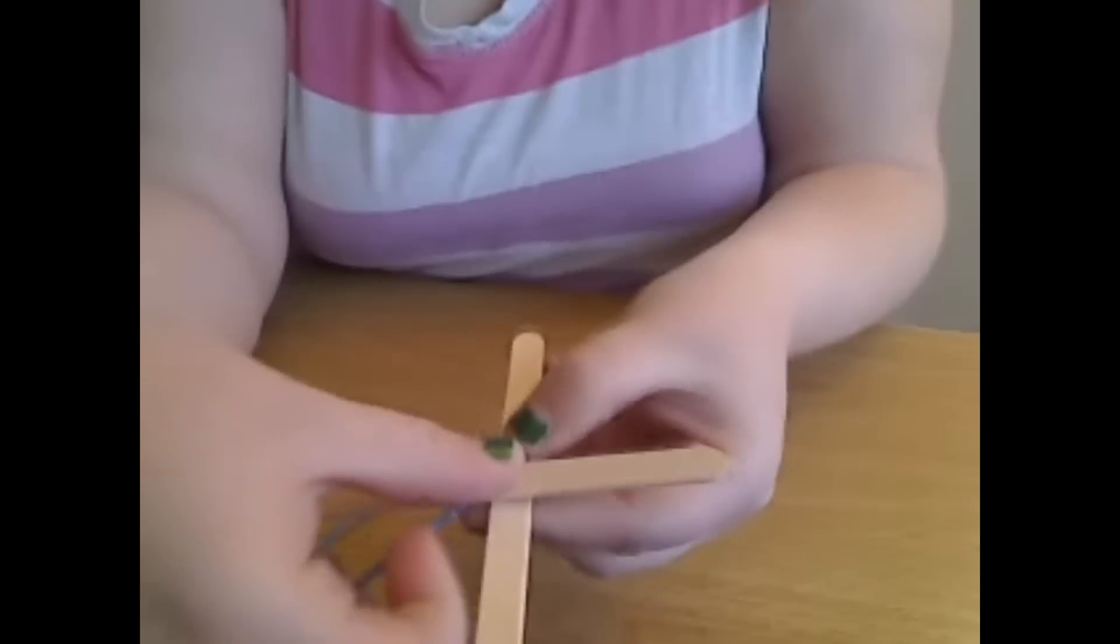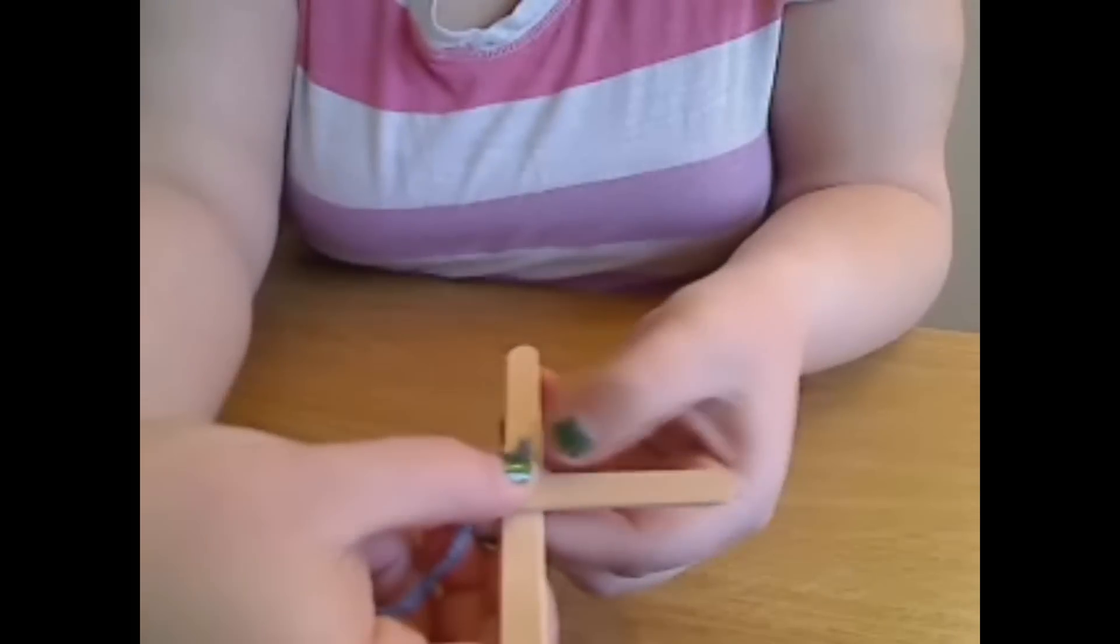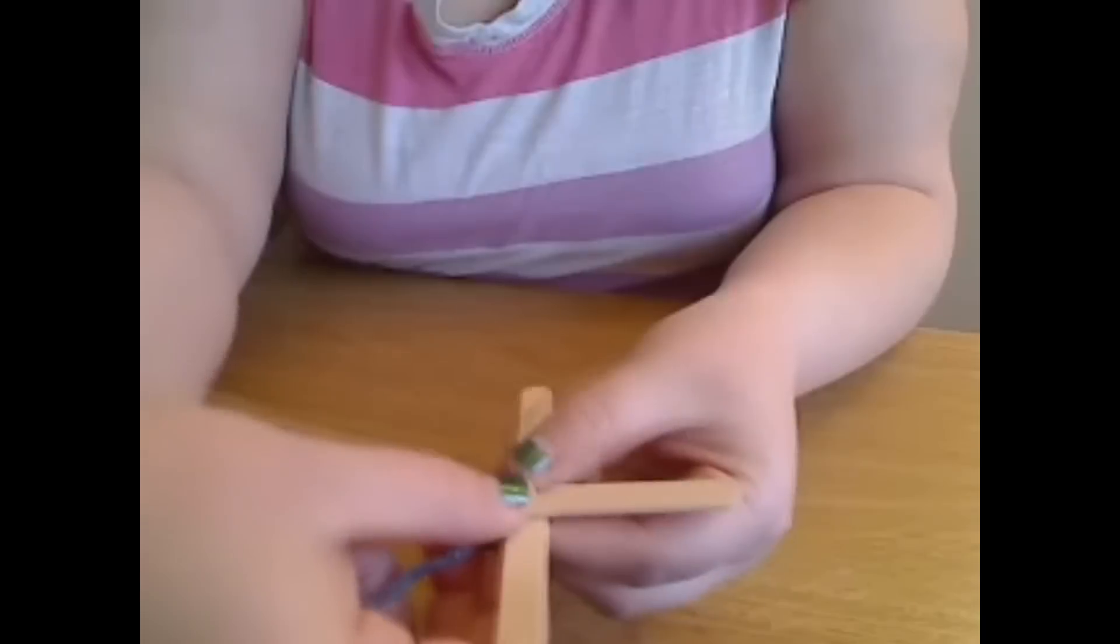Make sure you have a little excess yarn going down over the vertical popsicle stick and hold it in place.